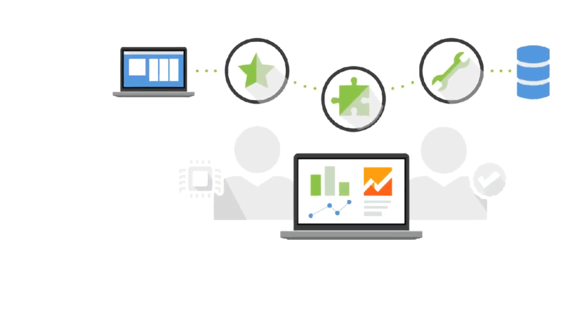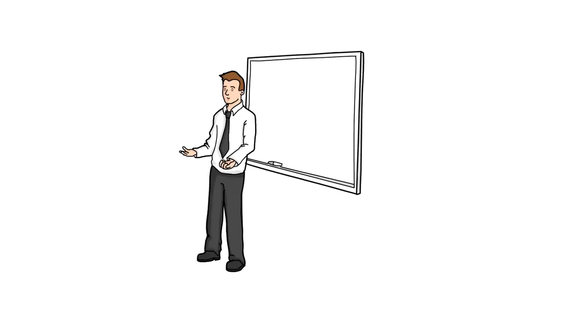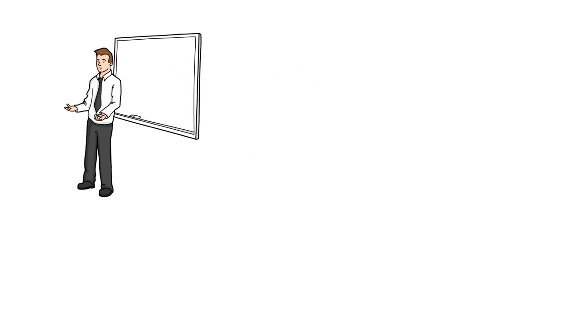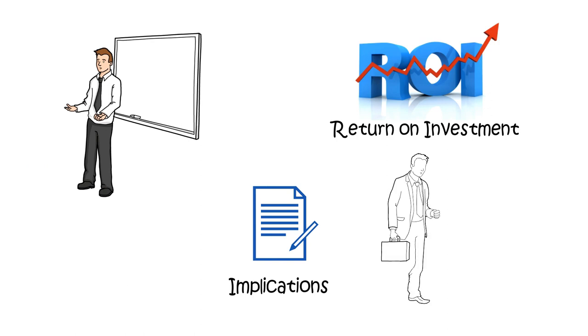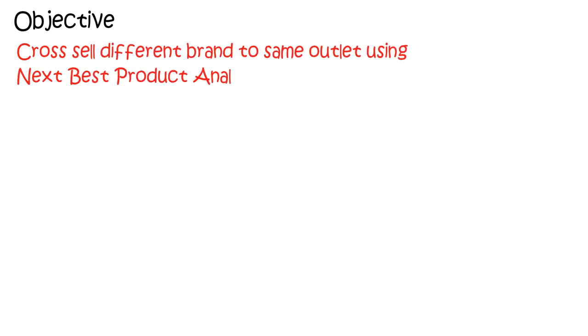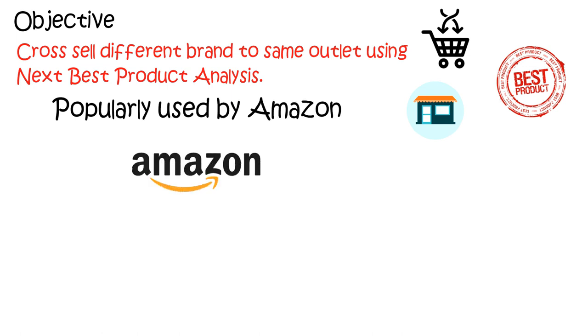Hello everyone, welcome to the Analytics Mastery Club. In the last session we learned how to calculate return on investment of a marketing campaign and its implications for a marketing manager. The objective of this session is to learn how to cross-sell different brands to the same outlet using next best product analysis. This analysis is popularly used by Amazon to suggest different products to its customers.